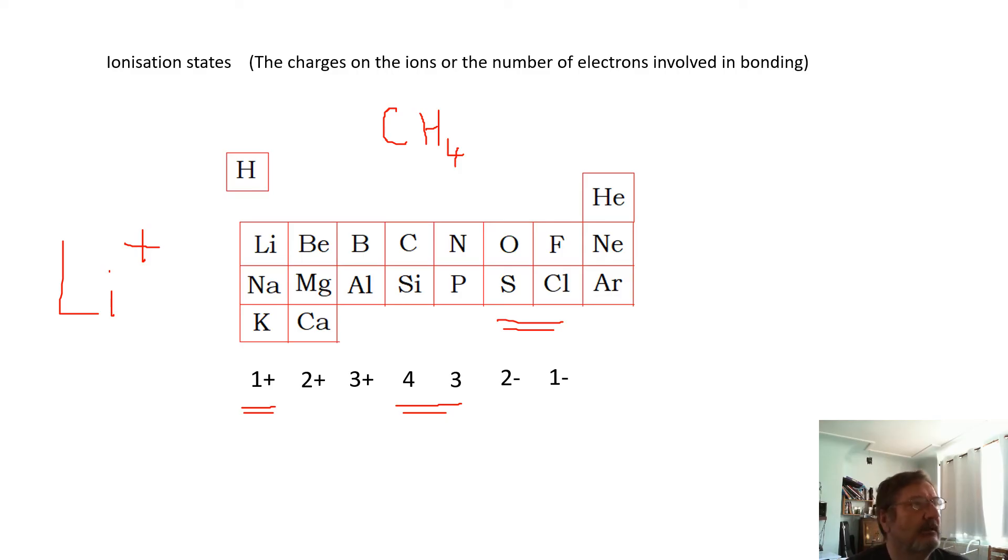Or if it's in a covalent bond, that's how many electrons are involved in bonding—just one electron. With oxygen and sulfur, it's two electrons. These guys here, group zero, they couldn't be bothered. They've got a full set of electrons; they're not particularly bothered about forming any compounds—the inert gases, the noble gases.